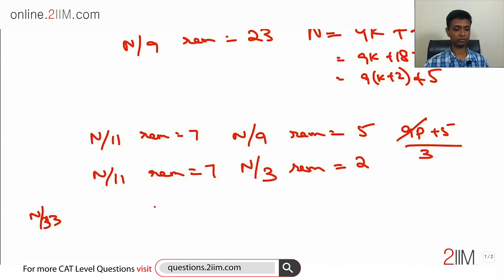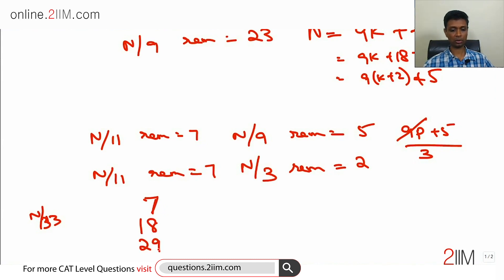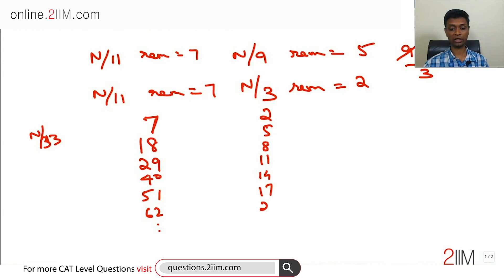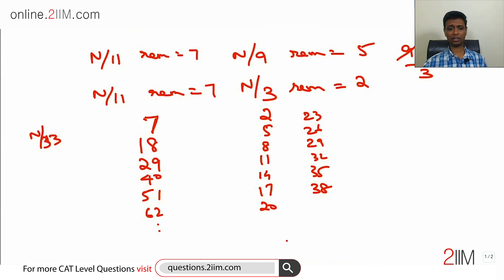So n÷11 remainder is 7 and n÷3 remainder is 2. We need to find n÷33. Let's list down a few numbers that satisfy each condition. Numbers where n÷11 remainder is 7: 7, 18, 29, 40, 51, 62, and so on. Numbers where n÷3 remainder is 2: 2, 5, 8, 11, 14, 17, 20, 23, 26, 29, 32, 35, 38, and so on. Is there any number that satisfies both conditions? Yes — the number 29.